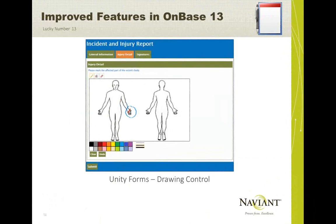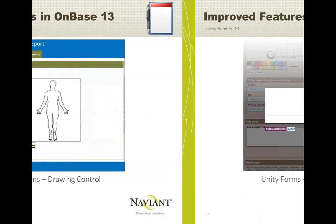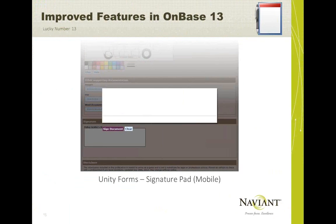The drawing control is a big one. You can always add an image to a Unity form, but it was just a static image. Now you can add an image that your form users can mark up — they can draw what areas of their car got damaged in an accident, or circle what parts of their body hurt while filling out a clinical form. This is a huge deal. The control and all changes get saved with the form when it is submitted, and you can pull it up again in OnBase.